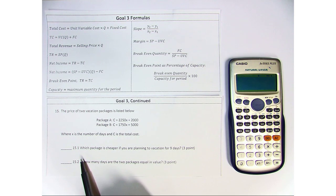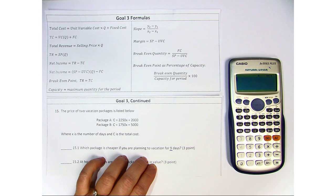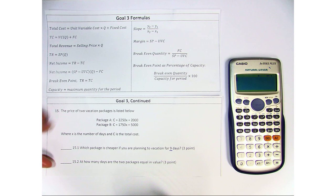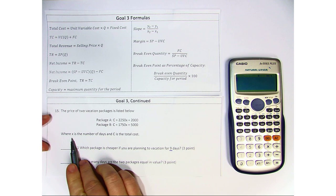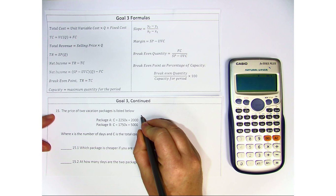15.1 says which package is cheaper if you are planning to vacation for 9 days. So what we're going to do is make a substitution in each of these for X equaling 9. So let's go ahead and start with package A.